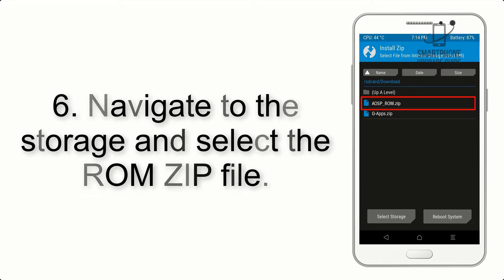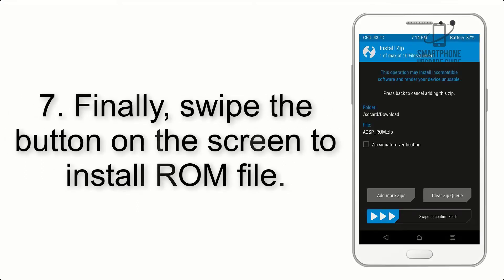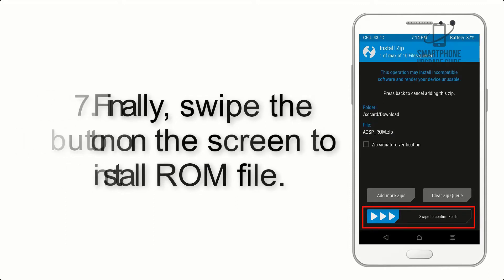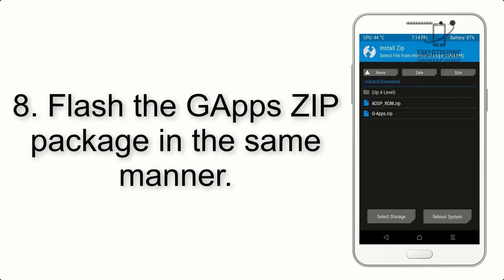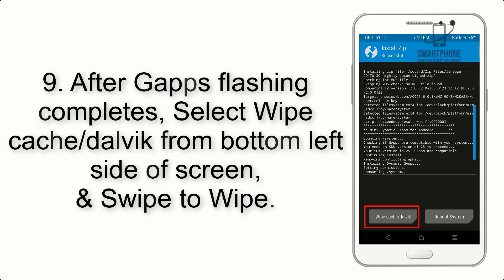Step 5: Go back to the recovery main screen and tap on the Install button. Step 6: Navigate to the storage and select the ROM zip file. Step 7: Finally, swipe the button on the screen to install the ROM file.